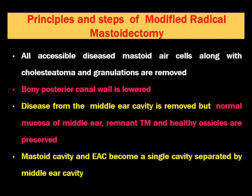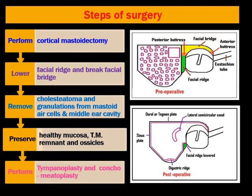This is done supposing that the patient's hearing may improve or be restored. The mastoid cavity and external auditory canal become a single cavity, separated from the middle ear cavity. So there will be two cavities in the ear: one will be the middle ear cavity, and the other will be the mastoid cavity along with the external auditory canal. We can also do cavity obliteration.